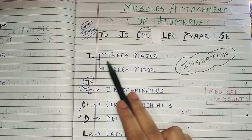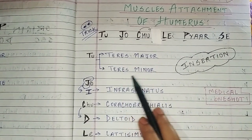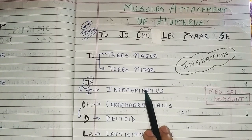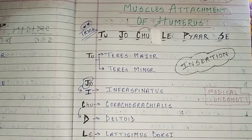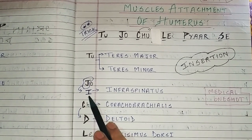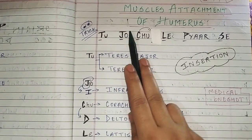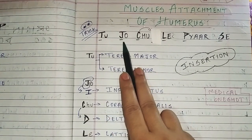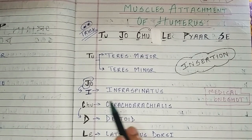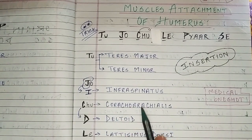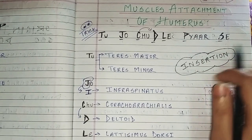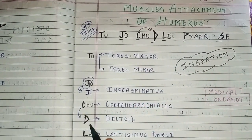This is the insertion muscle trick. From T — what will it be? Teres Major and Teres Minor. Then J, and the alphabet before J is I — so from I: Infraspinatus muscle. Then C — Coracobrachialis. After C comes D — so from D: Deltoid.